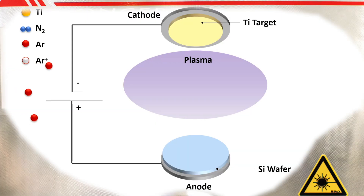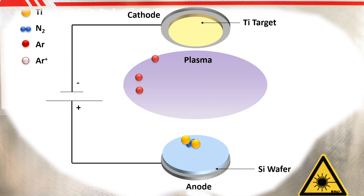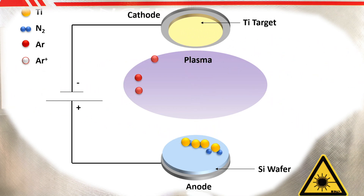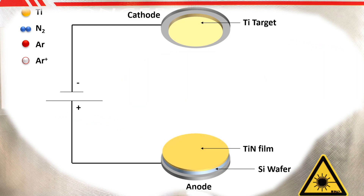30 atomic layers of titanium nitride, which means about 10 nanometers, are deposited by sputter deposition. Titanium nitride is deposited when the titanium target is bombarded in an argon plasma by ionized argon atoms. They knock titanium atoms out of the titanium target, and these titanium atoms fly through the vacuum to the silicon wafer, where they react with nitrogen atoms to form a titanium nitride layer.